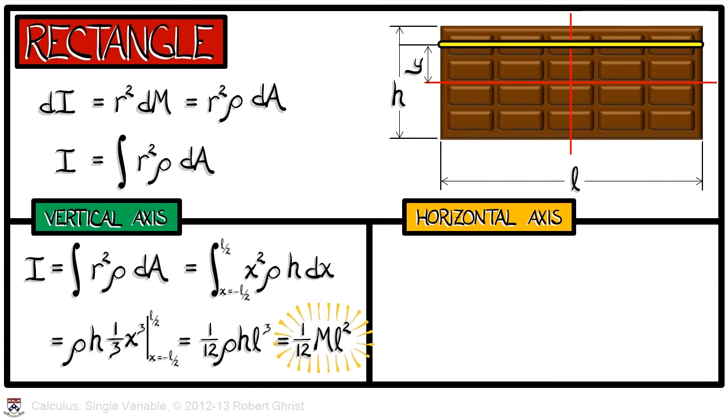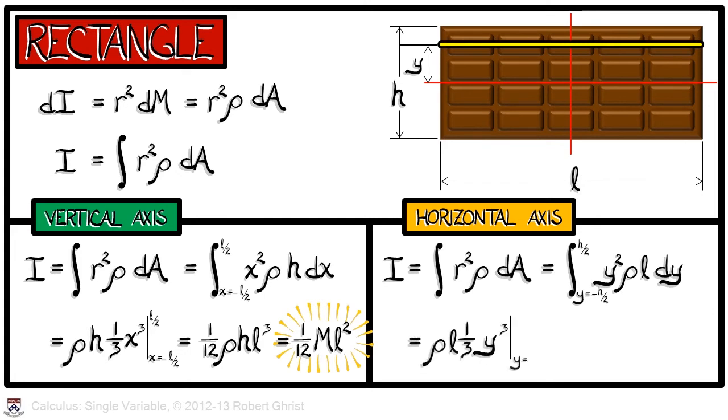I'm going to leave it to you to do the same in the case of rotation about a horizontal axis, where we wind up following the exact same procedure, but exchanging L for H, and vice versa. This yields an inertia of 1/12 M H squared.